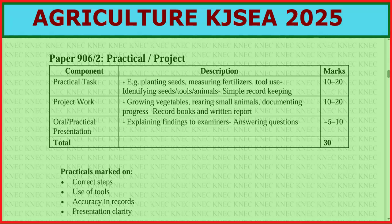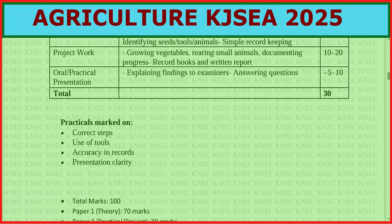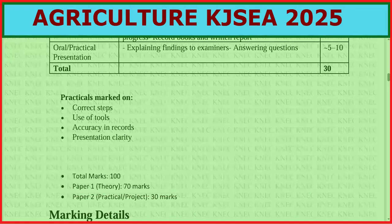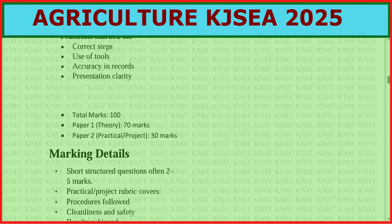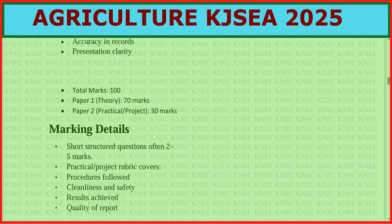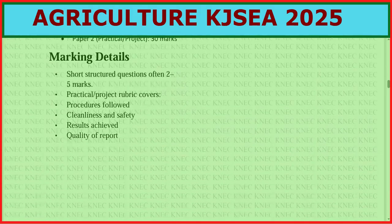Practicals are marked on correct steps, use of tools, accuracy in records, and presentation clarity. Total marks for the whole paper: Paper 1 is 70 marks and Paper 2 practical project is 30 marks.